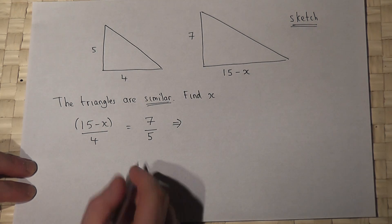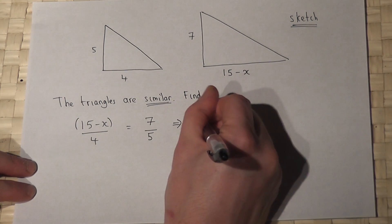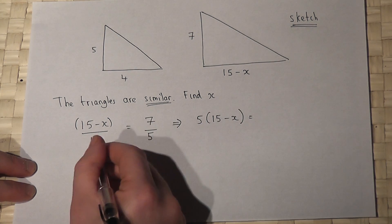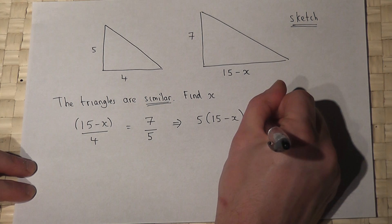So the equation becomes 5 bracket 15 minus x is equal to 7 lots of 4, which is 28.